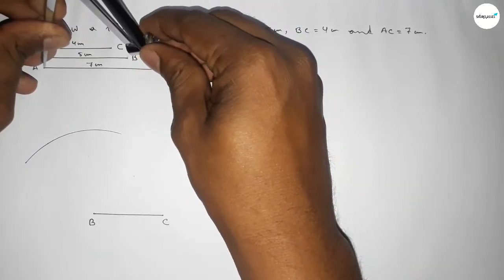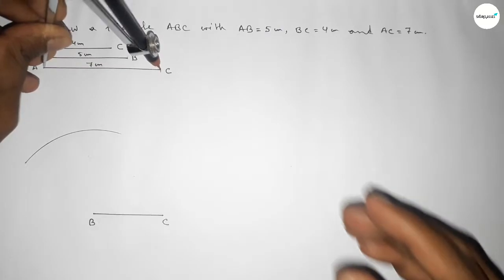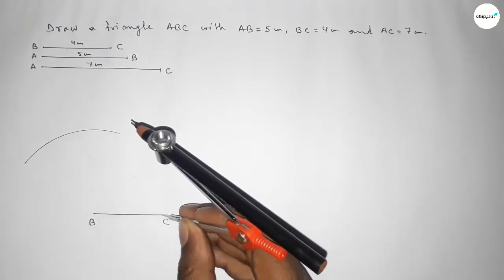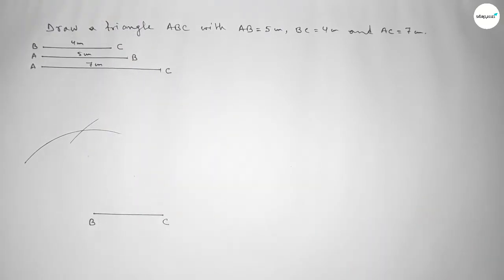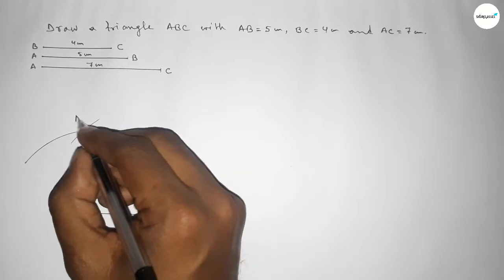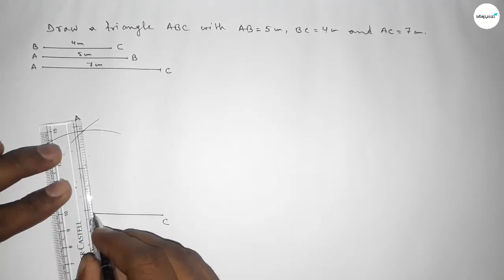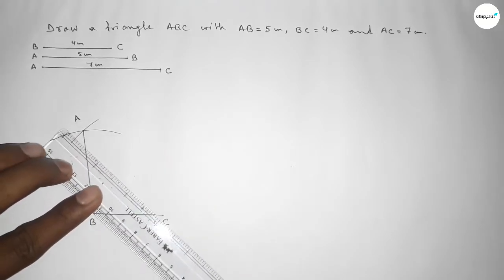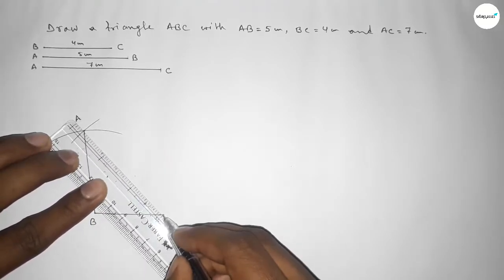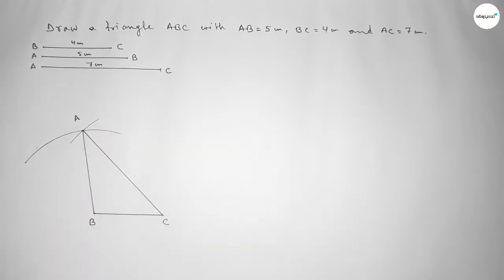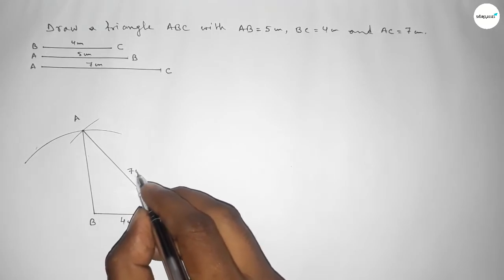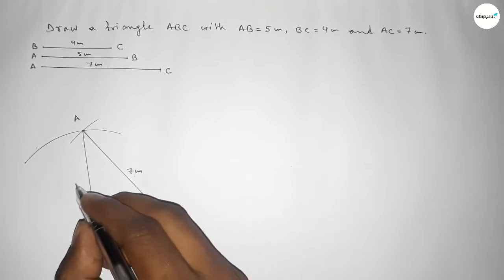Now taking length AC equal to 7 centimeter using the compass, placing the compass on point C and cutting an arc so both curves intersect at a point. Marking that intersection as point A, then joining A to B and A to C to get triangle ABC.